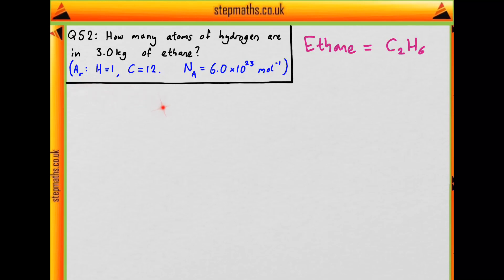So let's work out the relative molecular mass. We have two carbons and six hydrogens. So using these masses, that's 2 times 12 plus 6 times 1, so 24 plus 6 is 30. So that's how many grams of ethane are in one mole.